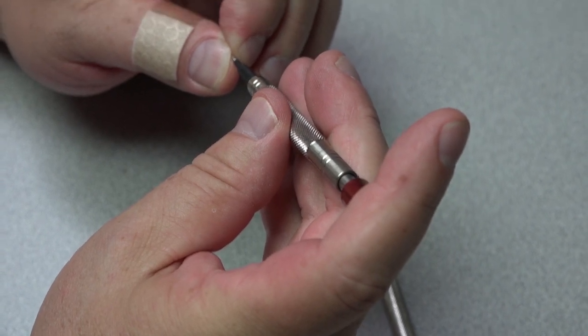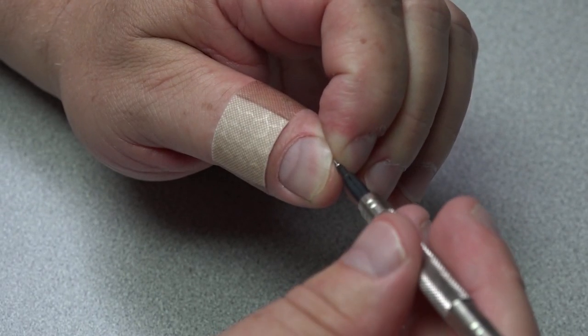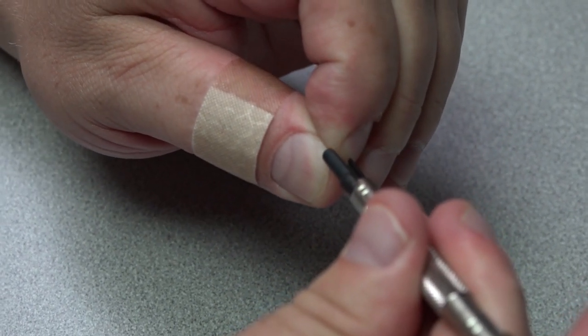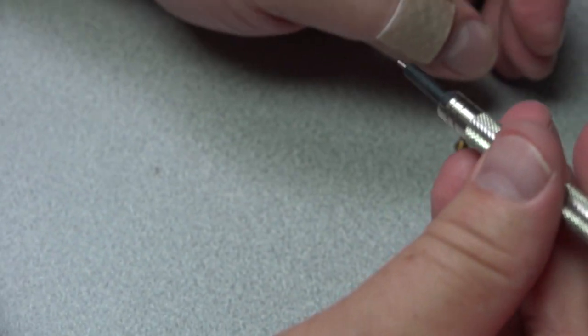So I'm gonna line up the Phillips screwdriver into the slots of the screw and I'm gonna do the same thing. I'm gonna push it down in until the wings come out and grab the screw.